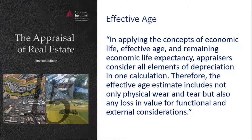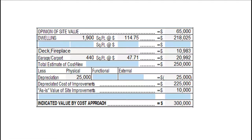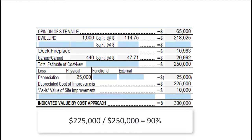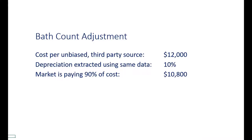Let's apply this to some depreciated cost adjustments. Remember our cost approach example that showed the market paying 90% of cost? Here's how to develop a bath adjustment. Per our source of third-party unbiased cost data, the cost of a bath at the time of construction — not adding a bath to an existing house — is $12,000. Using the same cost data, we saw there was 10% depreciation. So if the market is paying 90% of cost, we have support for an adjustment of $10,800. This is support, not proof, since there is no such thing as a proven adjustment.